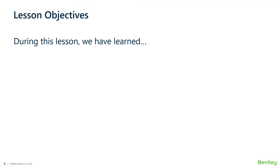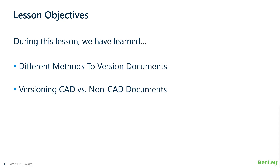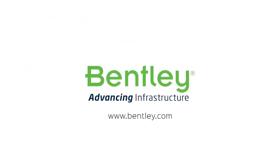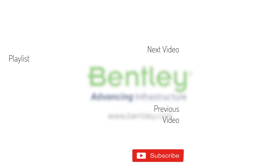During this lesson, we have learned the three different methods to version documents, as well as versioning of CAD and non-CAD documents, and what to watch out for when dealing with CAD references. We also learned how to display the latest version of a document as well as displaying all versions. If you found this video helpful, please give it a like, and if you want to see more, consider subscribing to our channel. Thank you and see you next time.